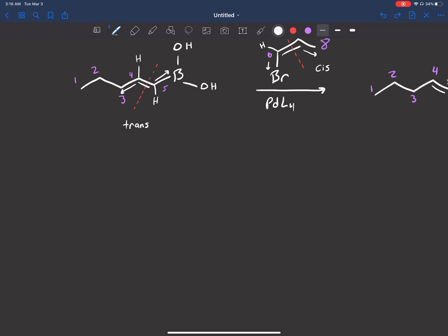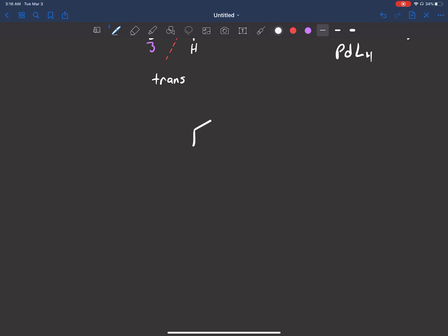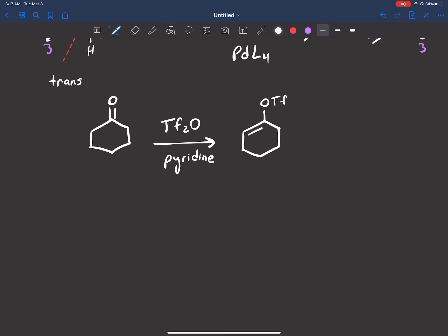So an example of how we would do it with the triflates, because I said we can do that too. Remember the way we make a triflate? Take this ketone, Tf2O over pyridine, and get this.